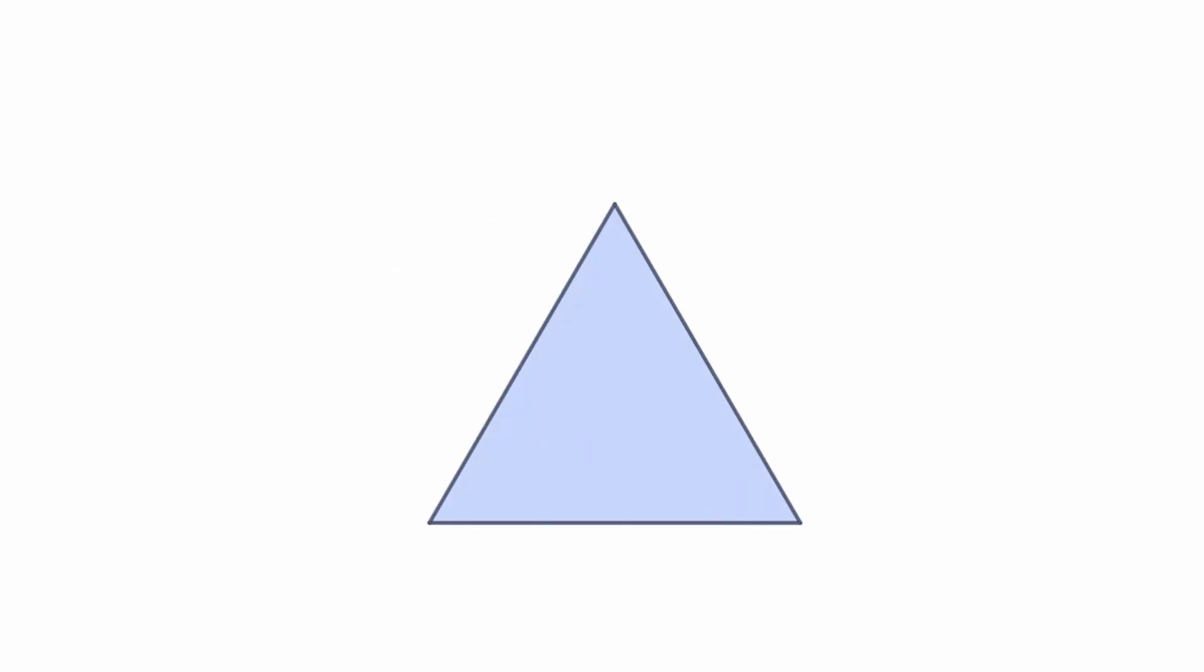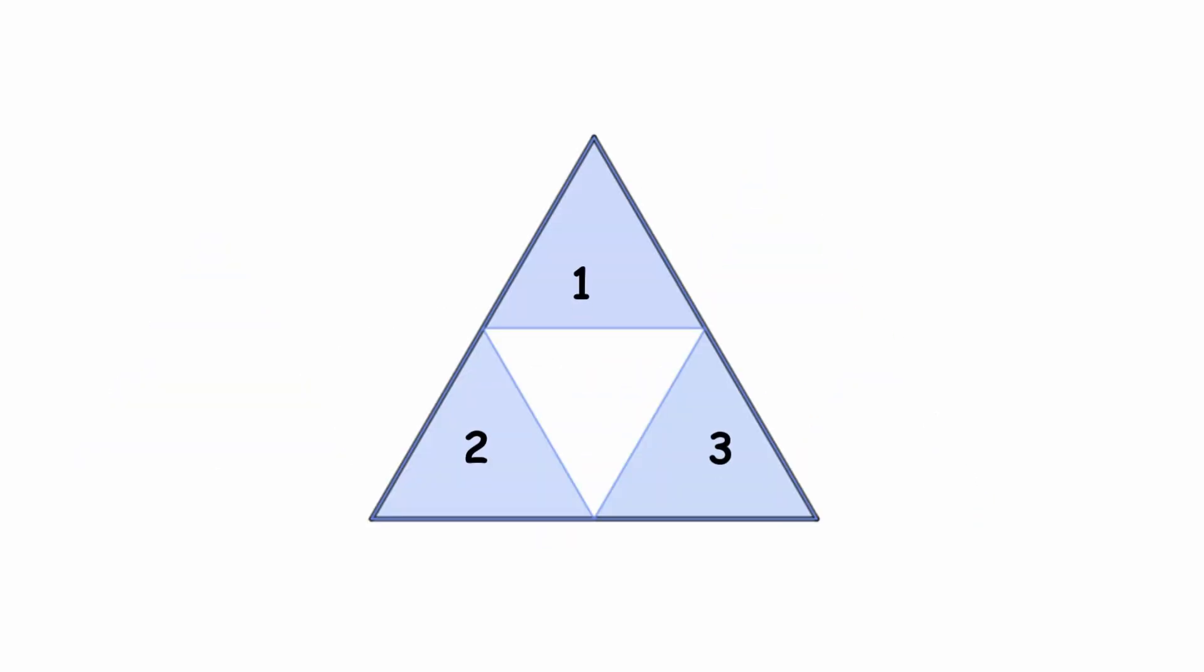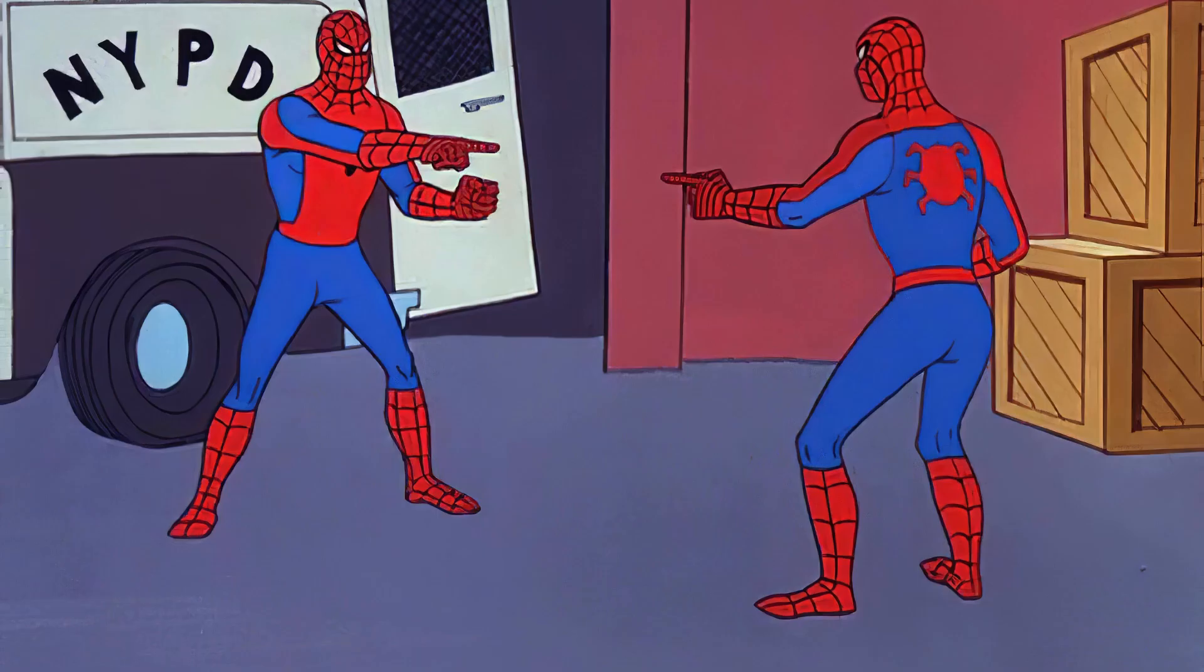The Sierpinski Triangle fractal is created from an initial equilateral triangle. At each iteration, a central triangle is removed, leaving three smaller triangles in its place. This process is repeated infinitely, creating a figure that is completely self-similar.